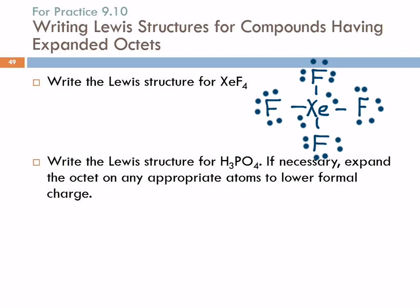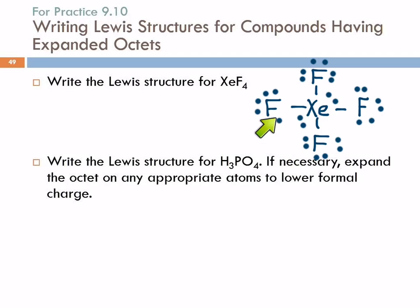What about the formal charges? Each of these fluorines has seven electrons and owns seven, so all the fluorines have zero formal charge. Xenon has eight valence electrons, and in this molecule it owns eight as well. All the formal charges are zero. Xenon is period five, so he's big enough for an expanded octet.